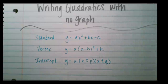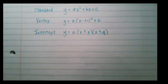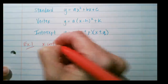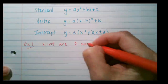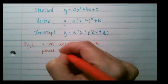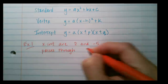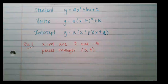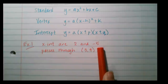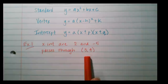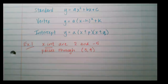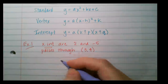Let's do our first example. The x-intercepts are 2 and negative 5, and the parabola passes through the point (3, 4). Since I know the x-intercepts, I'm going to use intercept form.